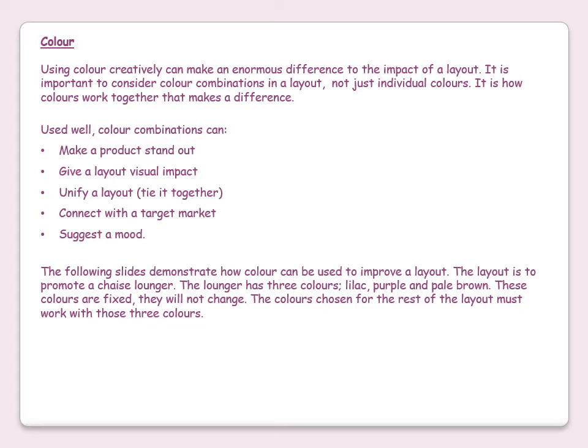The following slides demonstrate how color can be used to improve a layout. The layout promotes a chaise longue. The lounger has three colors — lilac, purple, and pale brown. These colors are fixed and will not change. The colors chosen for the rest of the layout must work with those three colors.